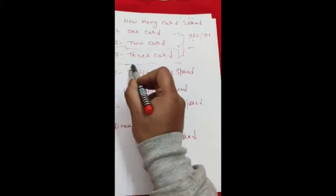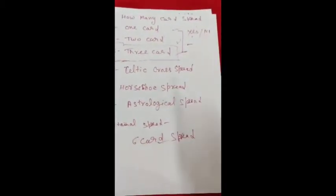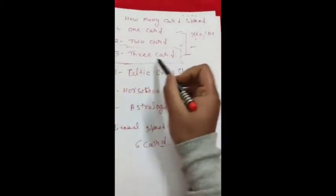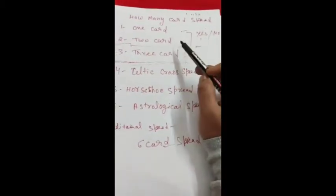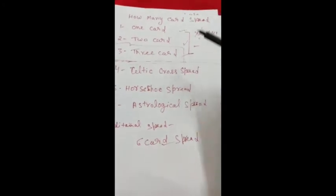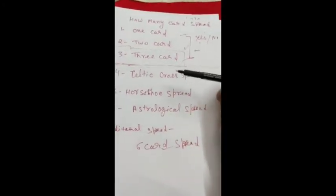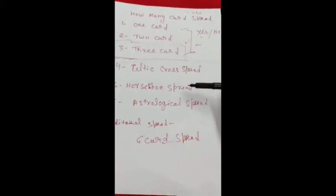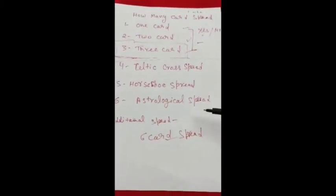Three card spread has various uses in various ways — we will discuss that in a detail video. So this is the simple technique for beginners: use only these three techniques first. Once you learn more about card spreading, then you can use the Celtic cross spread, horseshoe spread, and astrological spread. The sixth is the two card reading.